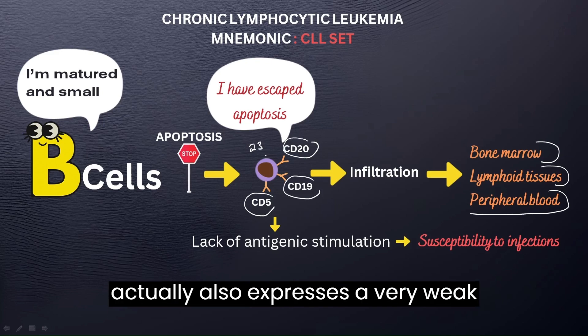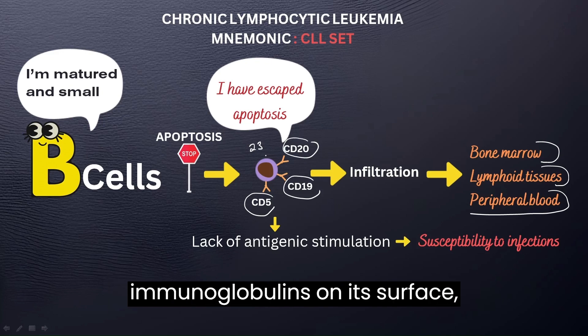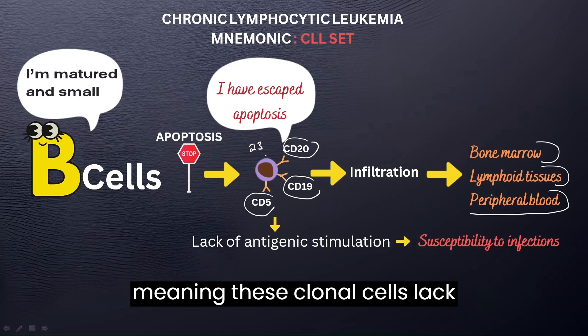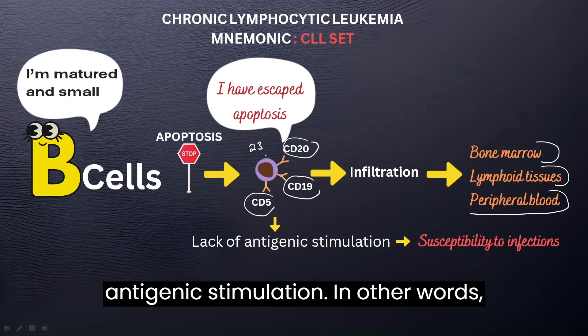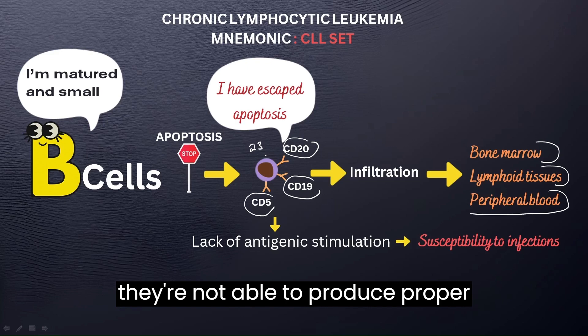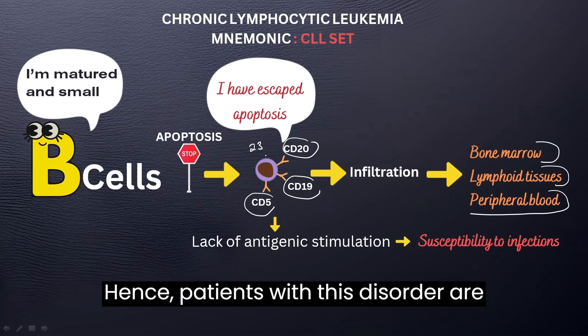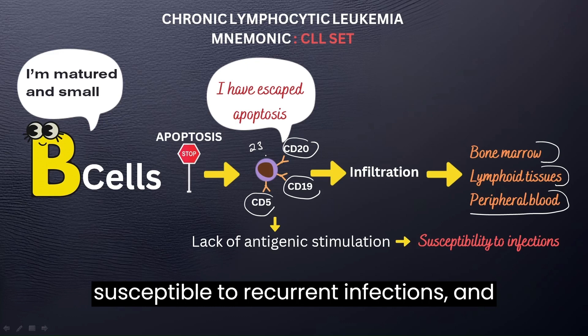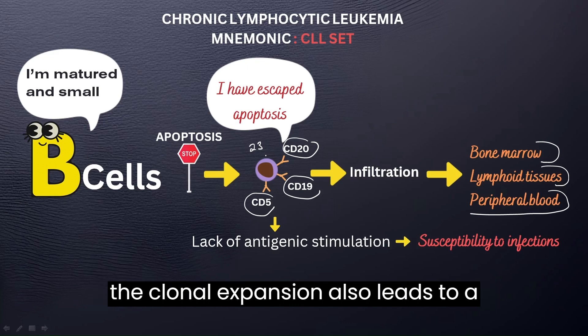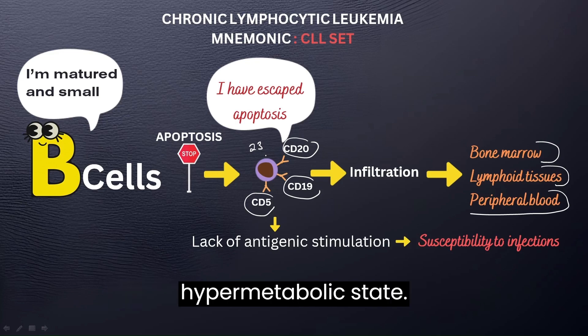These cells also express very weak immunoglobulins on their surface, meaning these clonal cells lack antigenic stimulation. In other words, they're not able to produce proper immunoglobulins to combat infections. Hence, patients with this disorder are susceptible to recurrent infections. The clonal expansion also leads to a hypermetabolic state.